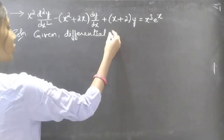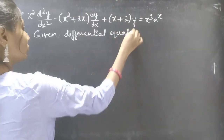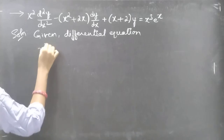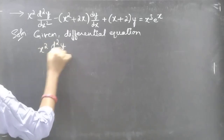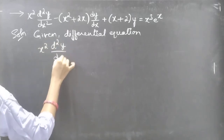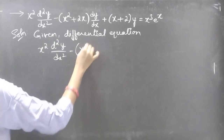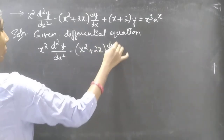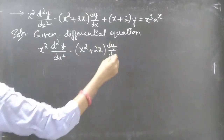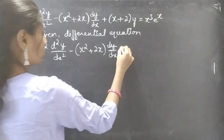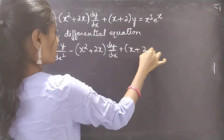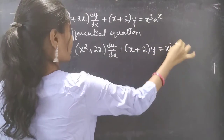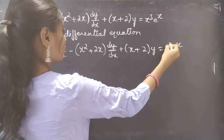Given differential equation: x squared times d²y/dx² minus (x squared plus 2x) times dy/dx plus (x plus 2) times y equals x cubed e to the power x.